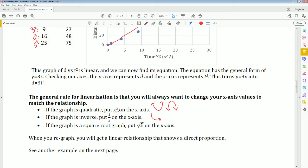Then lastly, if it behaves like a square root, which looks like this, you are going to put a square root of x. Or, because you can rewrite this as x to the power of 1 half on the x axis as well.